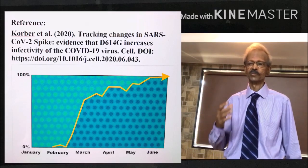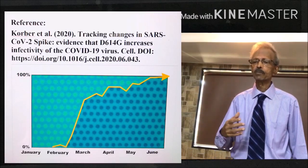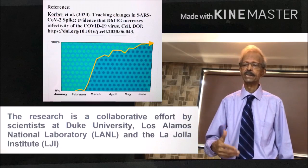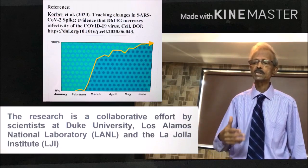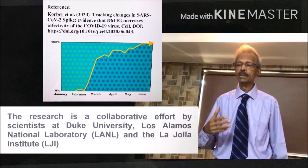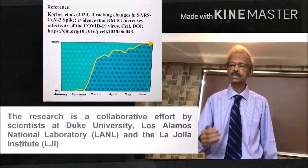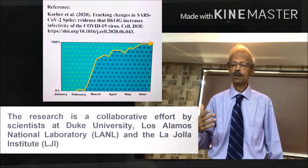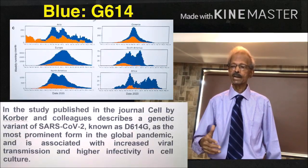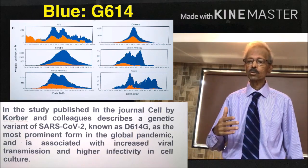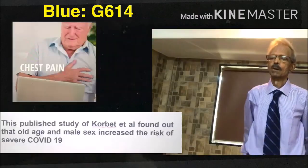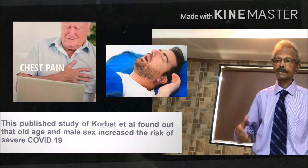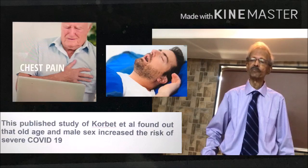Let us look at the reference of Korber et al. on the left hand side. The research is a collaborative effort by scientists at Duke University, Los Alamos National Laboratory, and LJ Institute, New Mexico, USA. According to this study, the D614G version of novel coronavirus is associated with higher infectivity. The published study found that old age and male sex increased the risk of severe COVID-19.